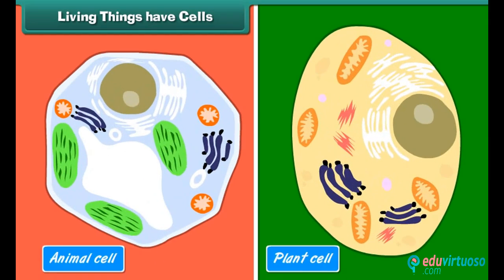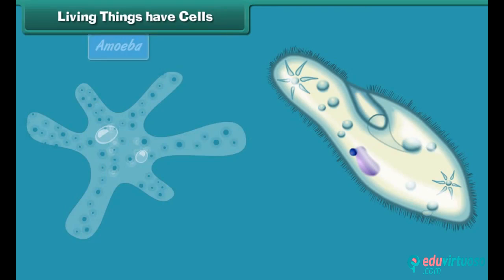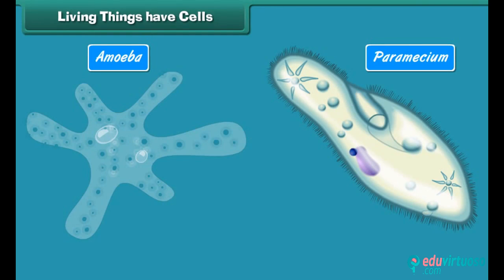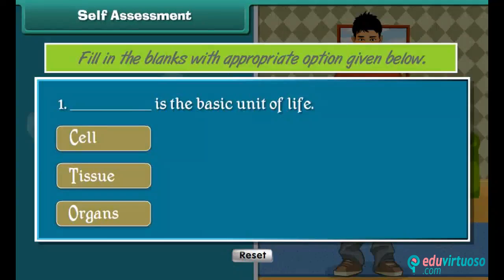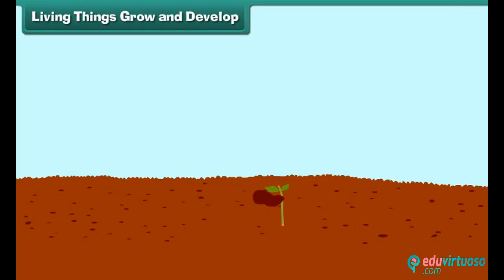Cells are made of protoplasm, or living matter. All body functions and properties of life are due to protoplasm. Some living organisms, like amoeba and paramecium, are made up of only one cell — they are called unicellular. Organisms made up of many cells are called multicellular.